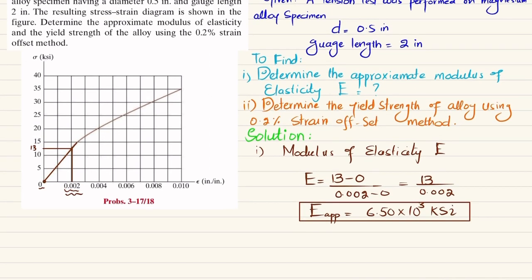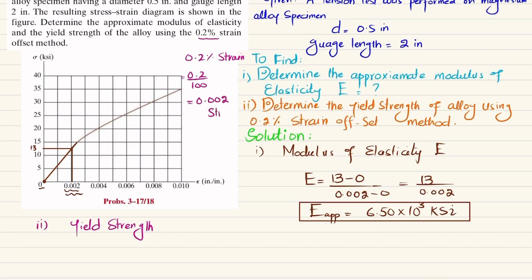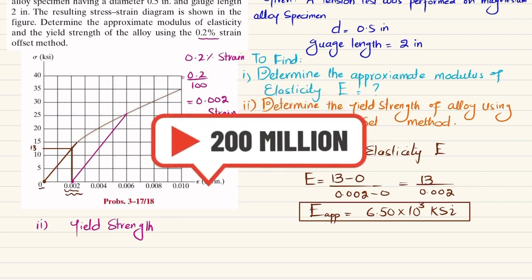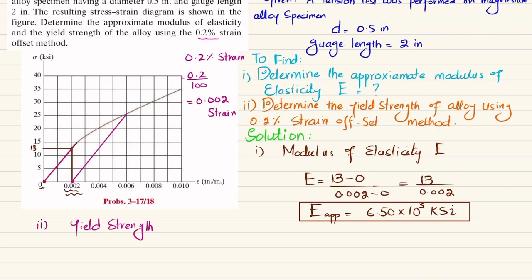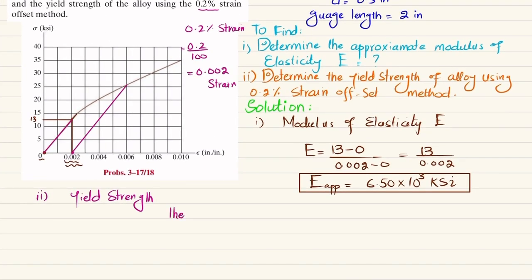Now for the second part: finding the yield strength. The 0.2 percent strain offset means 0.2 divided by 100, which equals a strain of 0.002. At this offset strain of 0.002, we draw a line parallel to the initial linear portion of the stress-strain curve.